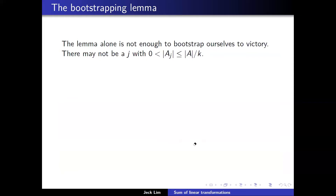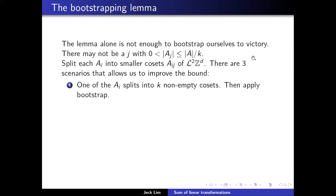The Brunn-Minkowski bound alone is not enough to keep improving the bound, because it is possible that no subset lies strictly between 0 and |A|/K in size. By pigeonhole there is always a subset of size at most |A|/K, but it could be empty.